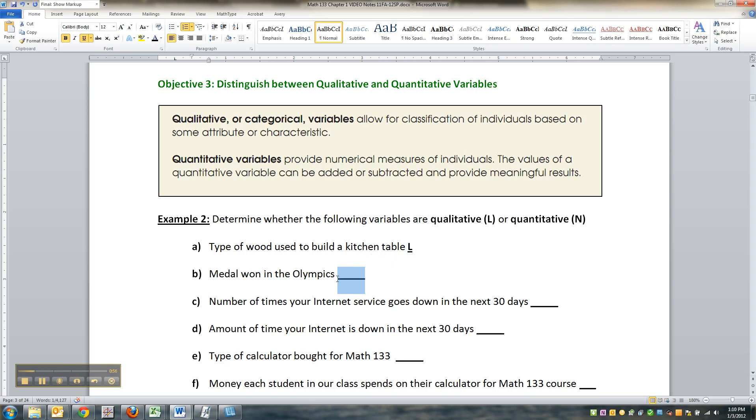Medal won in the Olympics - that would be like gold, silver, or bronze, right? That's also qualitative because you can't do a meaningful mathematical subtraction of gold versus bronze. You know gold is better than bronze, but you don't know by how much.